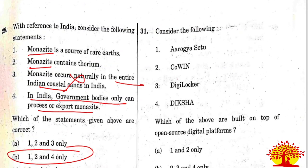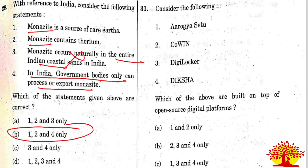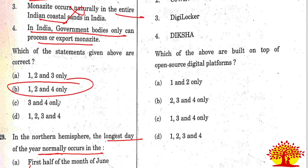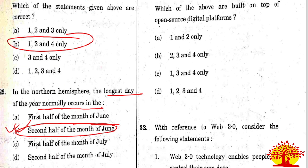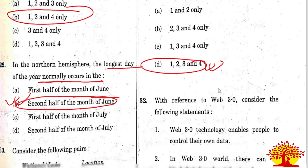Questions 31 to 40 are from Science and Technology. Thirty-first question: which of the following - Aarogya Setu, CoWIN, DigiLocker, DIKSHA - are built on top of open source digital platforms? All four are correct. Option D is the right answer. Open source projects are publicly available and accessible, promoting collaborative, participative, and rapid prototyping with transparency and community-oriented development, following a bottom-up approach.